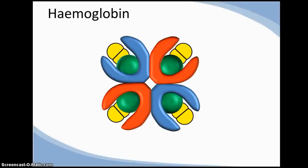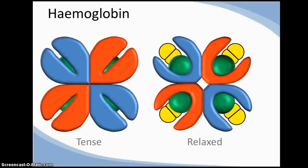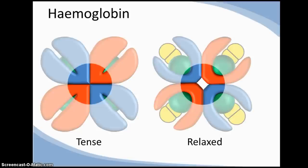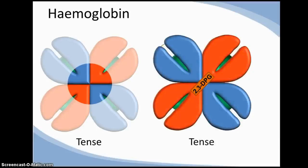The quaternary structure of oxyhemoglobin is much different than that of deoxyhemoglobin. Not only does oxygen binding affect the oxygen binding sites, but also the centre of the molecule. This then becomes a binding site for 2,3-DPG, which is a glycolytic by-product that binds to the beta subunits and pushes haemoglobin into the tense state, which promotes oxygen unloading.